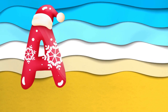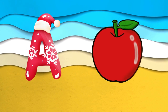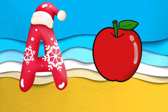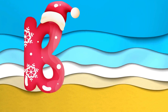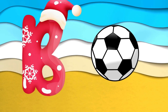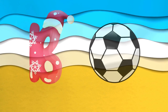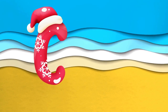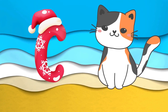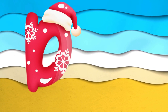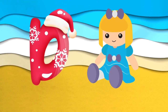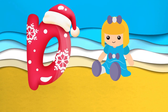A is for apple, a-a-apple. B is for ball, b-b-ball. Z is for cat, c-c-cat. D is for doll, d-d-doll.